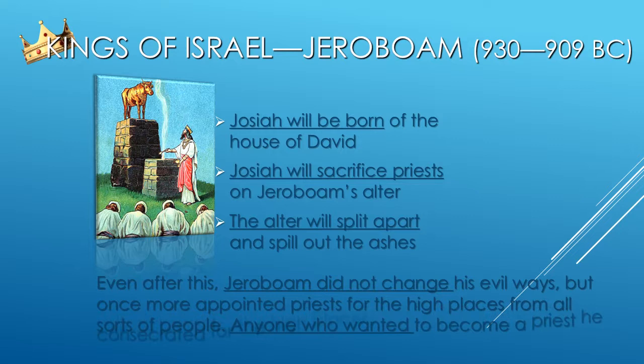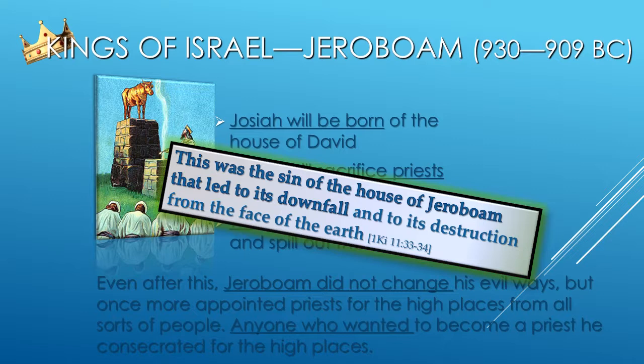After this thing, Jeroboam did not turn from his evil way, but made priests for the high places again from among all the people — any who would, he ordained to be priests of the high places. And this thing became sin to the house of Jeroboam, so as to cut it off and to destroy it from the face of the earth. This was the sin of the house of Jeroboam that led to its downfall and to its destruction.